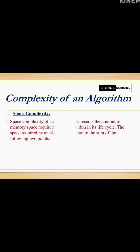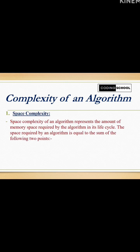First is space complexity. Space complexity of an algorithm represents the amount of memory space required by the algorithm in its life cycle. The space required by an algorithm is equal to sum of following two points.